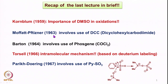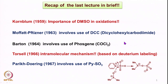We also discussed Moffat-Pitner oxidation, which involved the use of dicyclohexylcarbodiimide (DCC), which activated DMSO and allowed the formation of an intermediate that reacts with the alcohol and eventually leads to the formation of the carbonyl compound. As an extension, Barton used phosgene to activate DMSO for the oxidation of alcohols. However, phosgene being a very low-boiling compound and not easy to handle was a drawback.